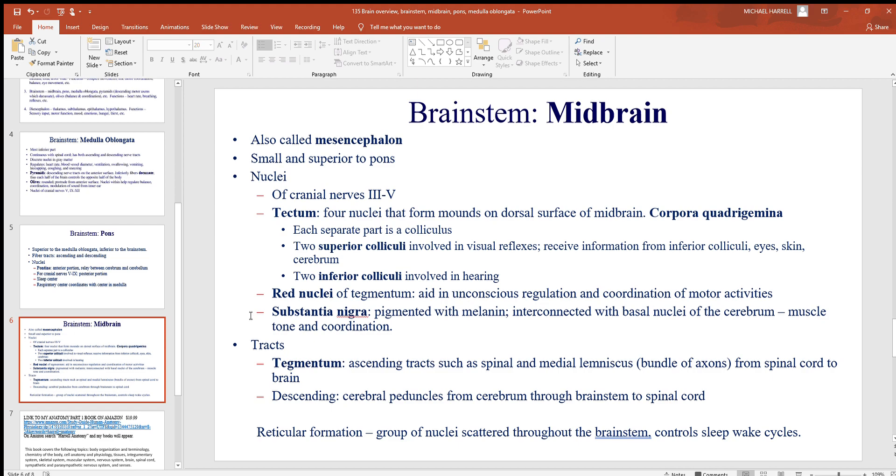There are the red nuclei - these aid in conscious regulation and coordination of motor activities. There's the substantia nigra area where you got some melanin, so it's a little bit darker. This is interconnected with the basal nuclei of the cerebrum - a lot of muscle tone and coordination here. You've also got this region called the tegmentum, lots of ascending tracts. In other words, coming up - you see spinal and medial lemniscus, bundle of axons in this region coming up from the spinal cord to the brain.